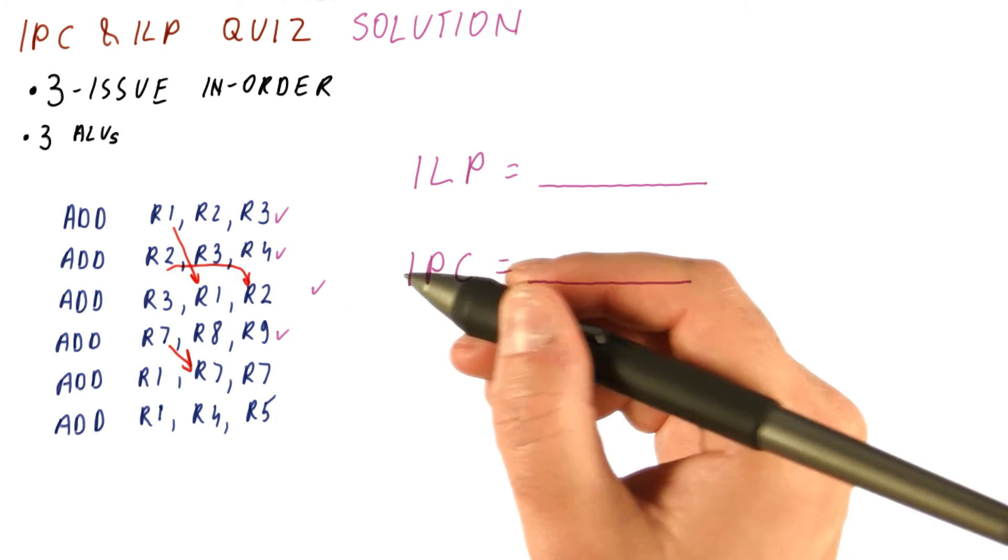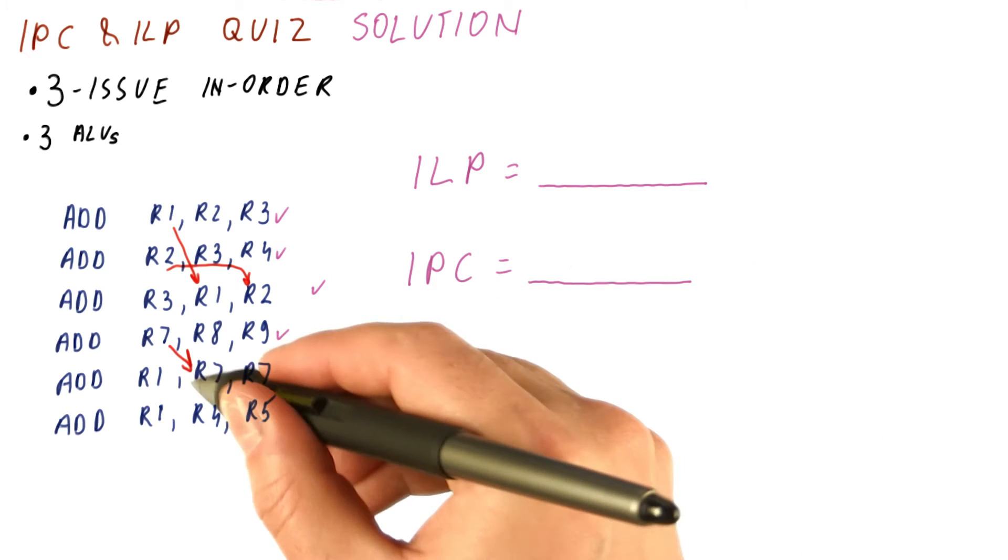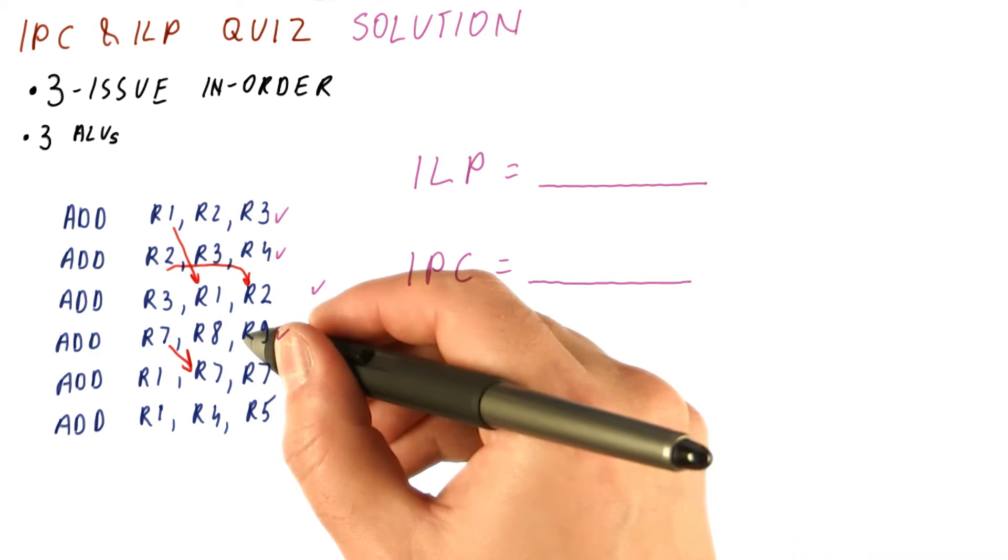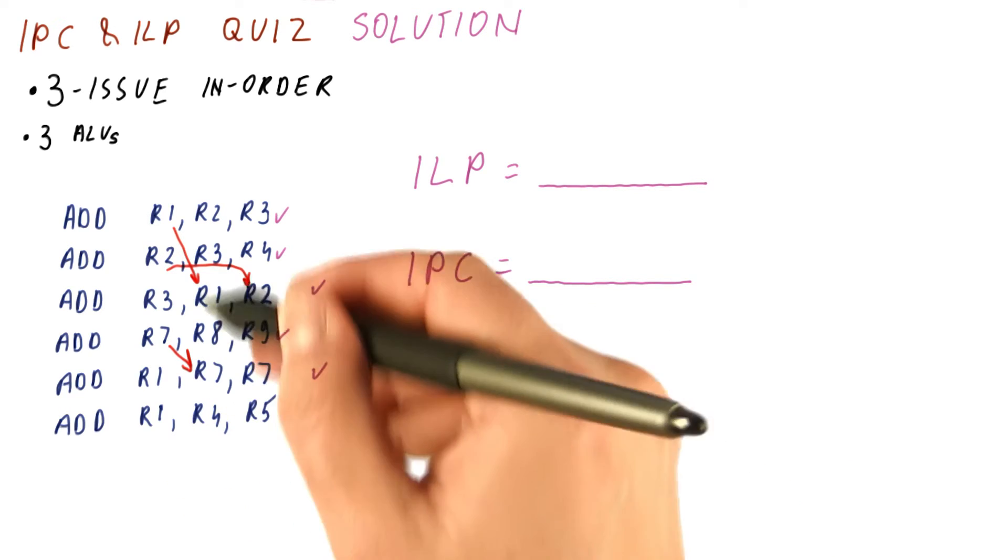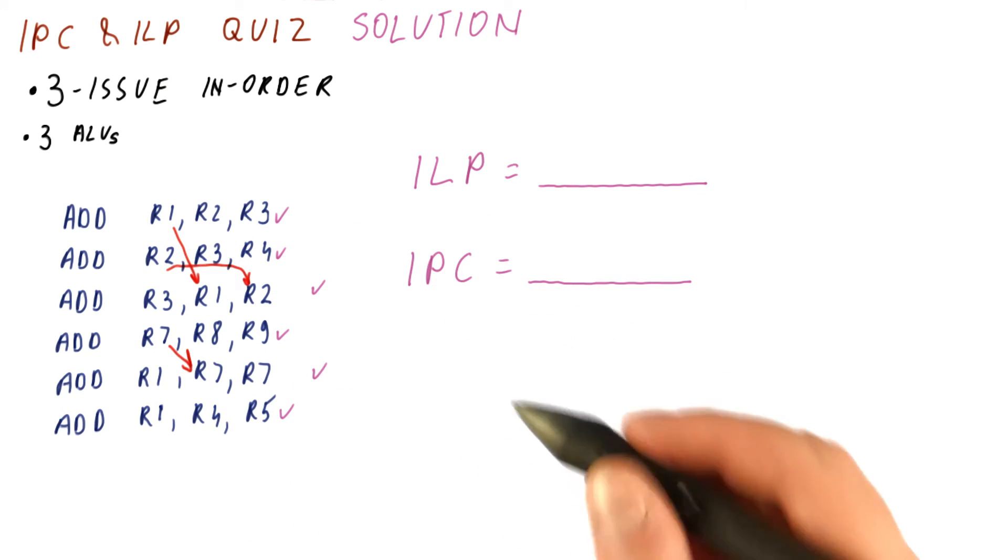This one, however, can be done in the first cycle. This one cannot, it needs the R7 that is produced by this one. So this gets done in the second cycle. And then this one actually doesn't depend on anything. So it can also be done in the first cycle.